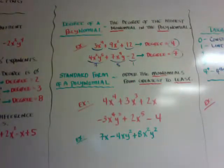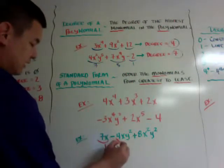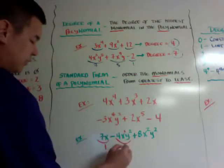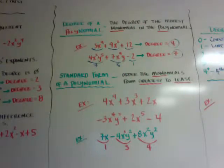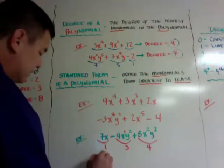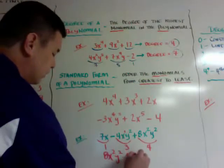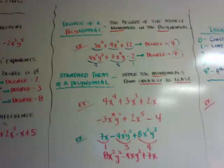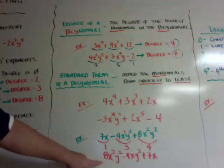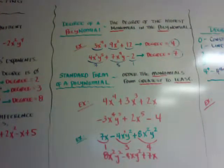So what we need to do is figure out the degree of each one. The degree of this monomial is one. The degree of this monomial is three (with an invisible one). And the degree of this one would be four. So you would rearrange it — it would be 8x²y² minus 4xy² plus 7x. That's how you put it into standard form: arrange it from greatest degree down to the least.